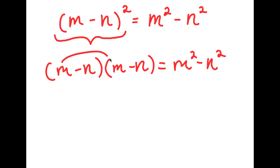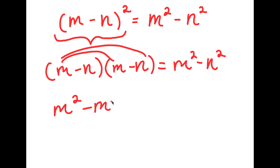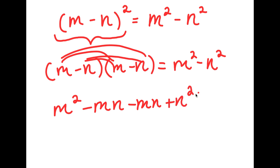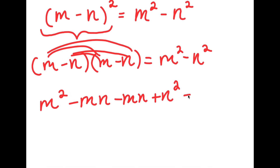To multiply these two, I'm going to first start by distributing the m. m times m is m squared. m times negative n is negative mn. Now I'm going to distribute the negative n. Negative n times m is negative mn, and negative n times negative n is positive n squared. So I have this is equal to m squared minus 2mn plus n squared.